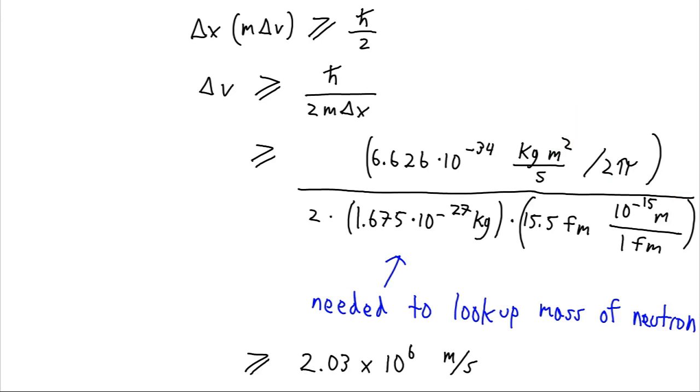And then what will be left is one of the meters in this per second term, which is good because that's what I need for a velocity. I need meters per second. So I do this calculation and I get that our uncertainty in velocity must be greater than or equal to 2 times 10 to the 6 meters per second.